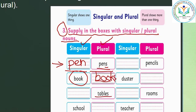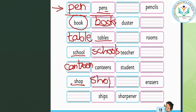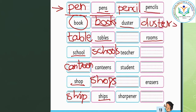Tables — table. School — schools. Canteen — canteen. Shop — shops. Ships — ship. Pencils — pencil. Faces. Duster — dusters. Rooms — room. One teacher, more teachers.